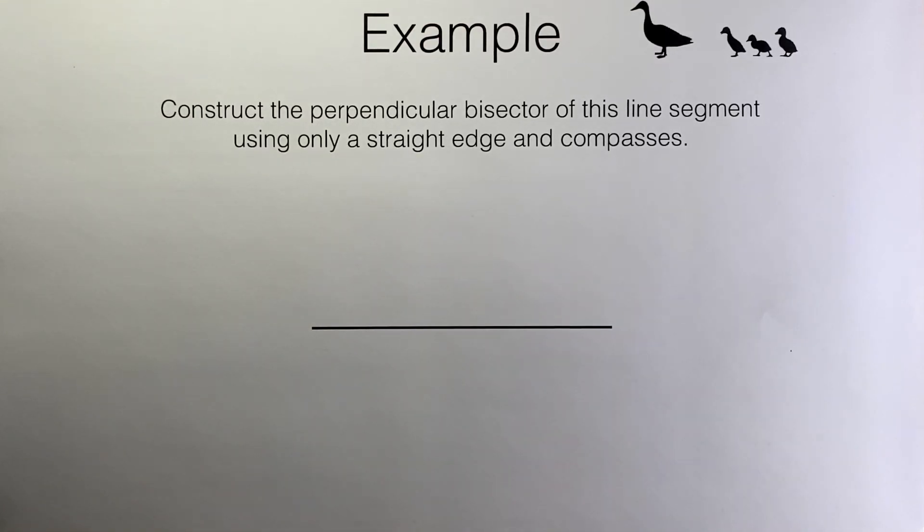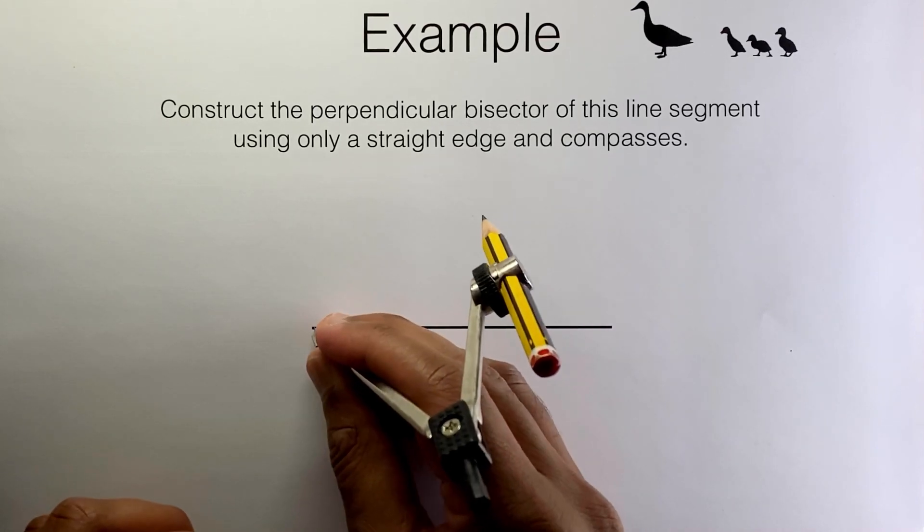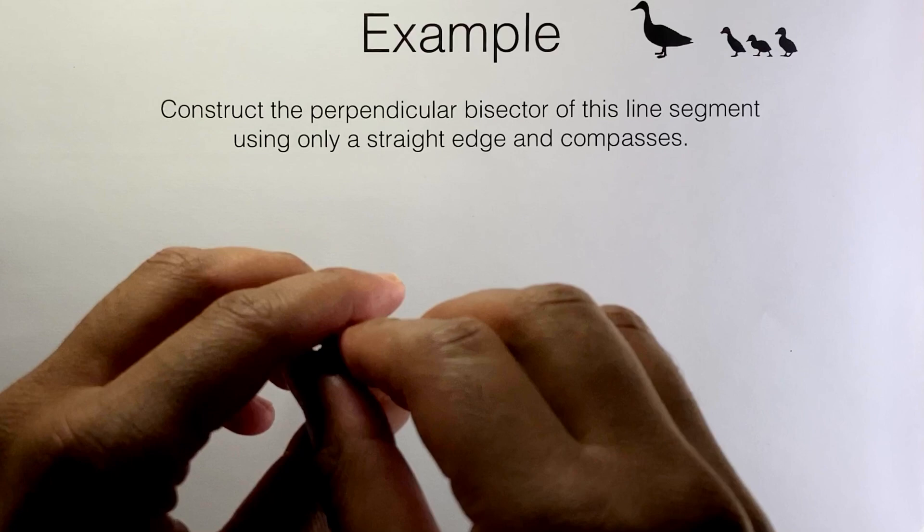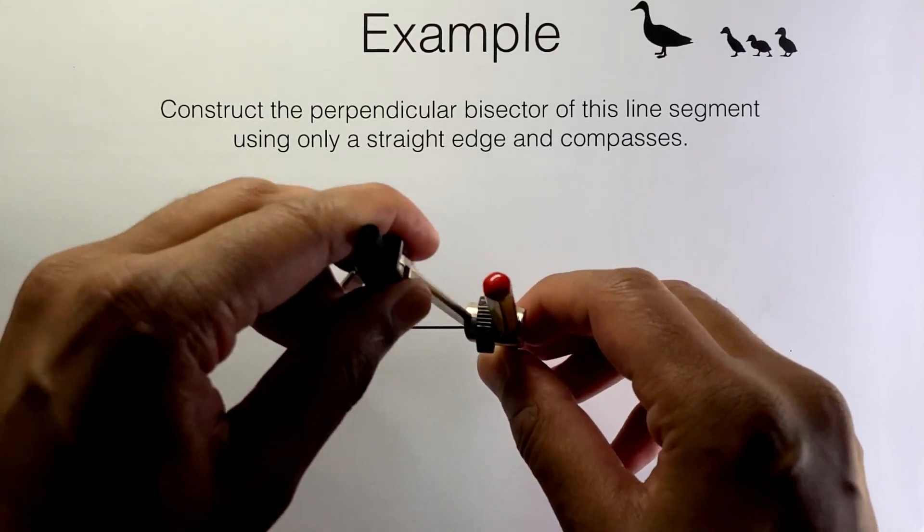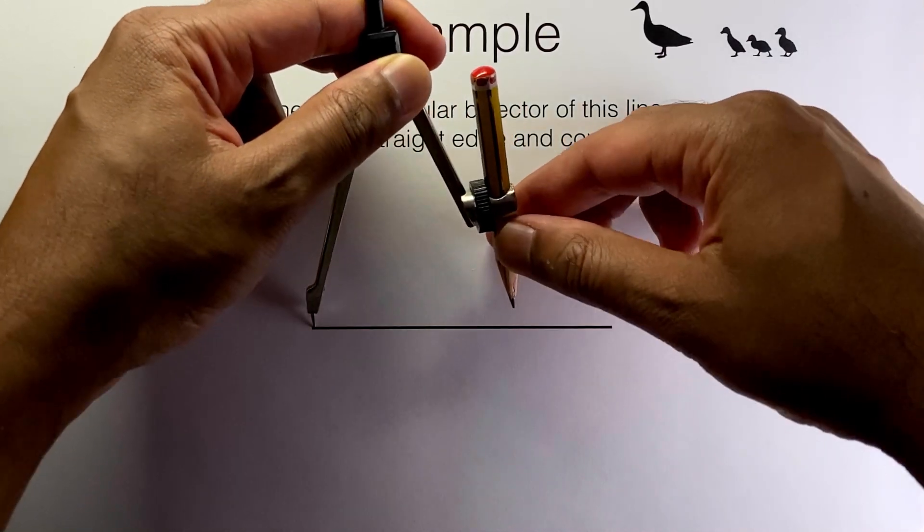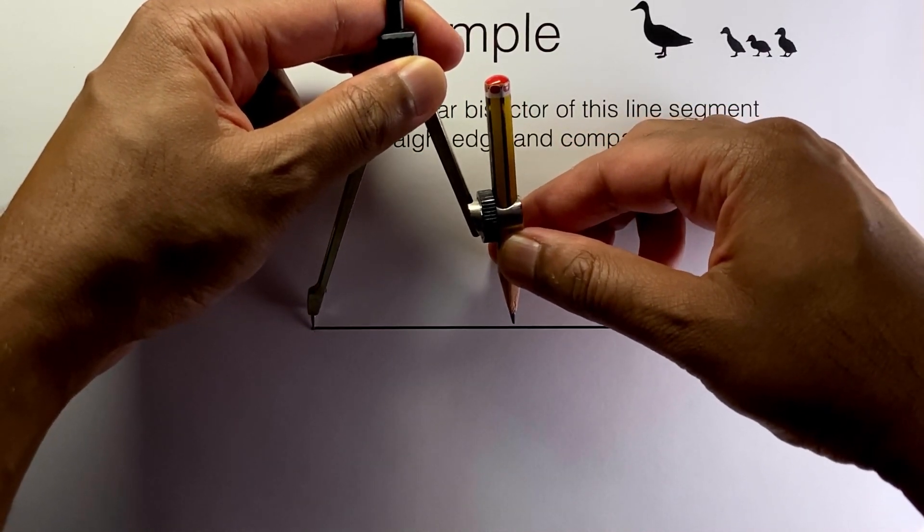So here's one way we can draw the perpendicular bisector. I'm going to place the needle at one of the endpoints, so I'm going to start with that endpoint there, and then what I'm going to do is open up the compasses to about three quarters of the way along the line. It doesn't actually need to be exact, it just needs to be more than halfway along.